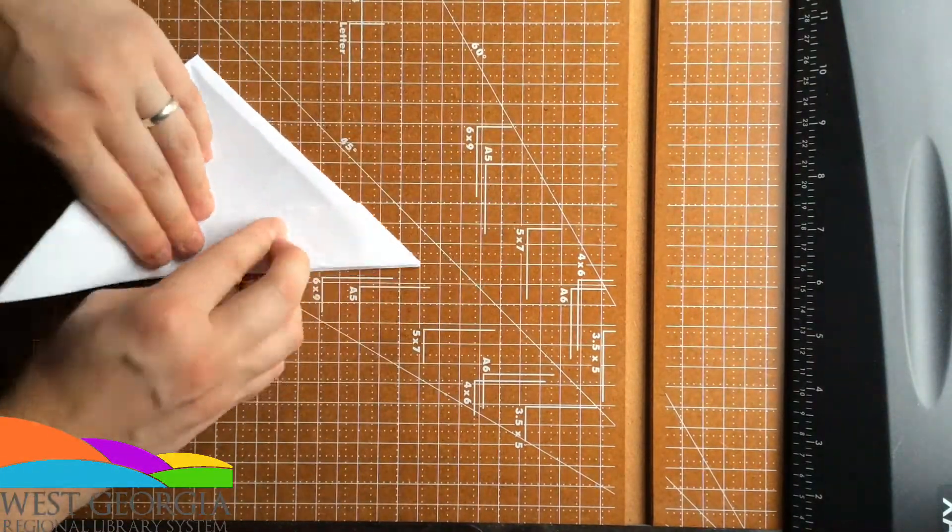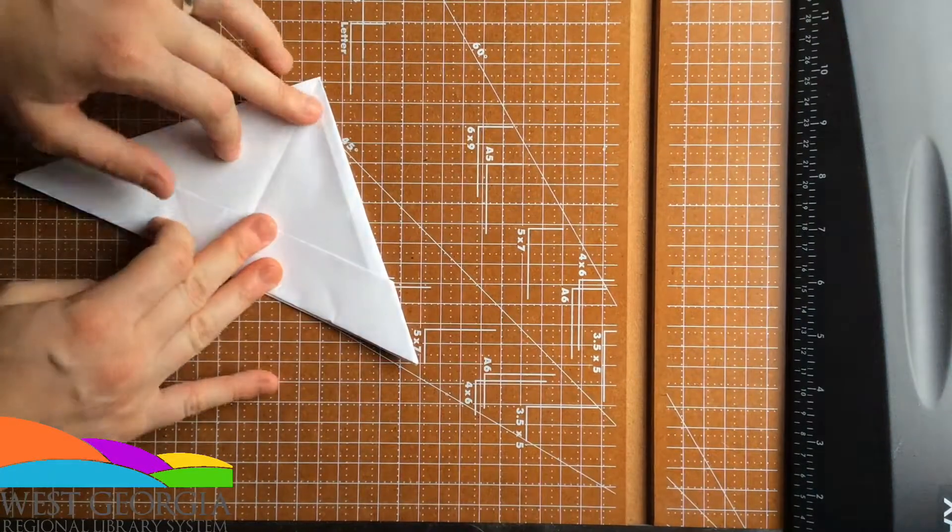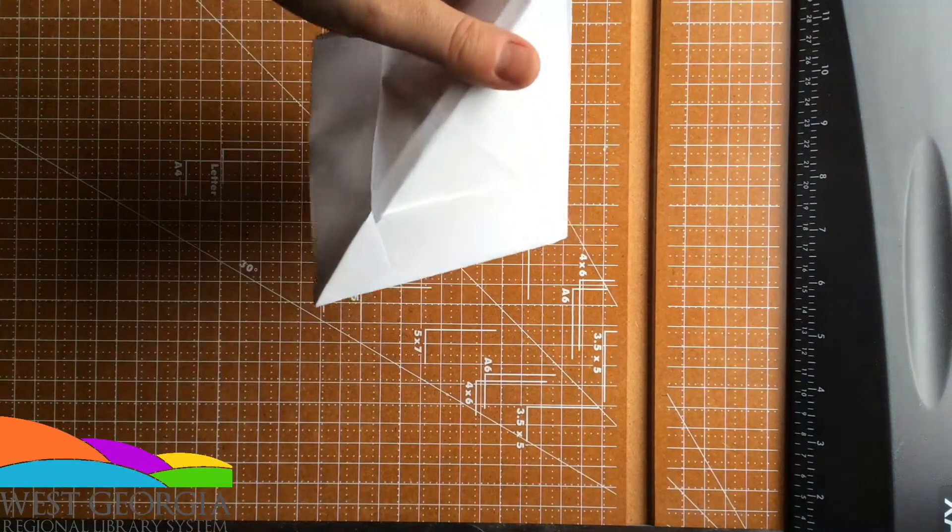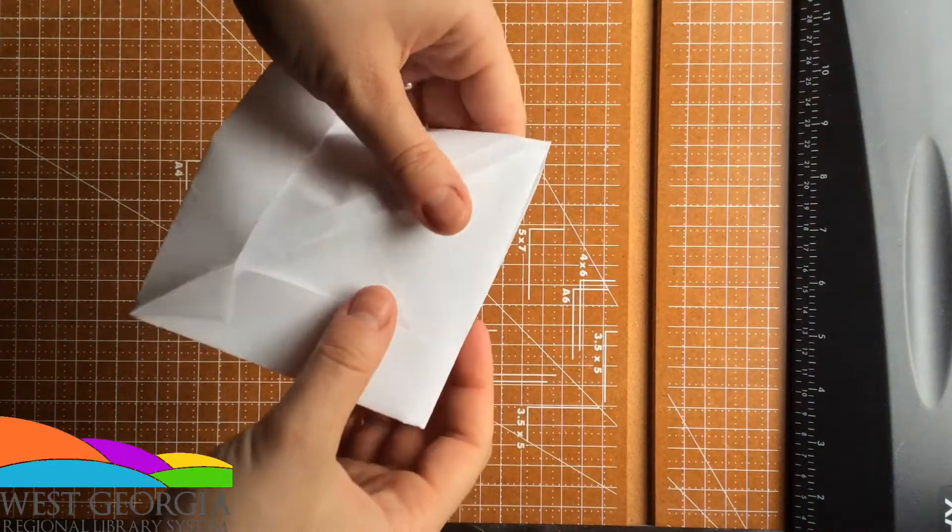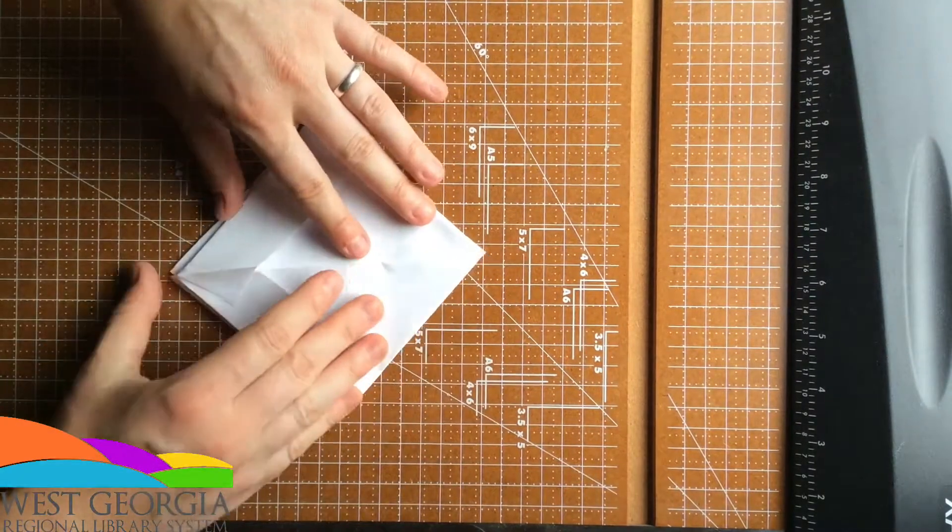Fold in half. Unfold. Now, you should be able to pop it open, like so. Flatten to the new diamond shape.